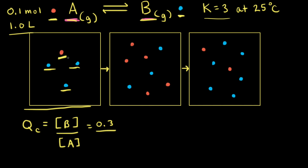For A, we have one particle, so that's 0.1 moles divided by 1 liter, which is 0.1 molar. So the concentration of A is 0.1 molar, and 0.3 divided by 0.1 is equal to 3, so QC at this moment in time is equal to 3. Notice we could have just counted our particles — three blues and one red — and said 3 over 1, which would have been a little bit faster.